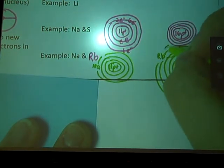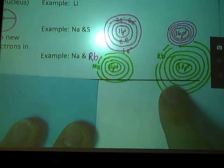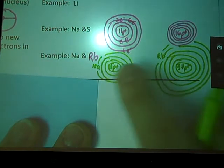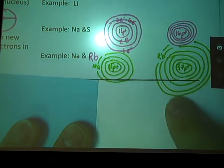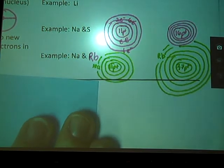So just by looking you can already tell that rubidium has a considerably larger radius than sodium. Why? He has more rings. So that is the trend for atomic radius.